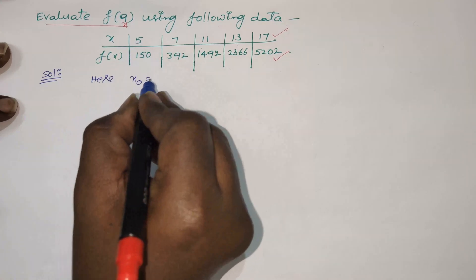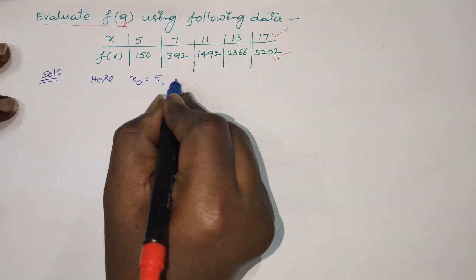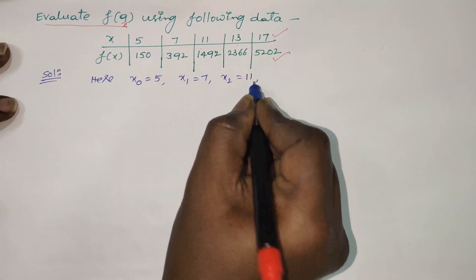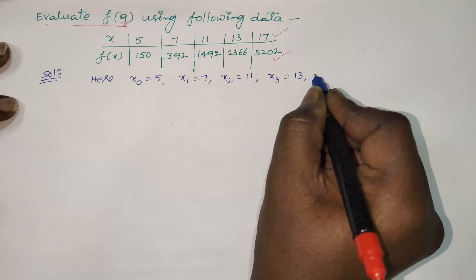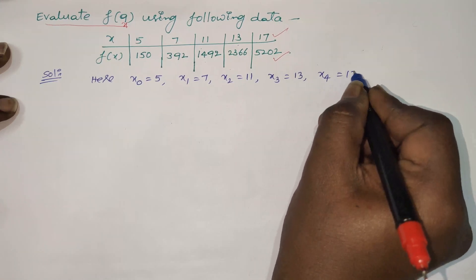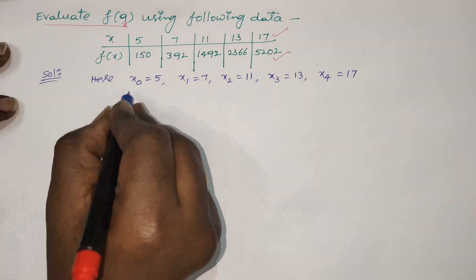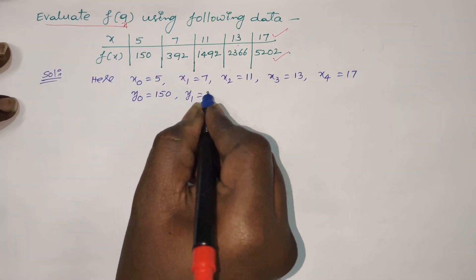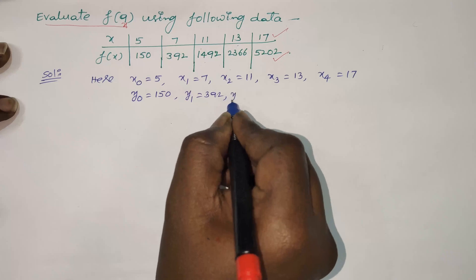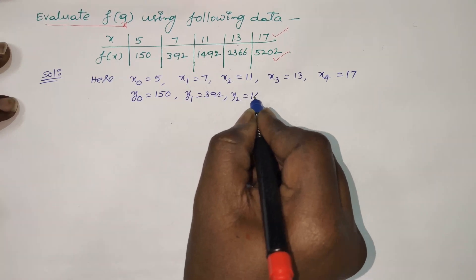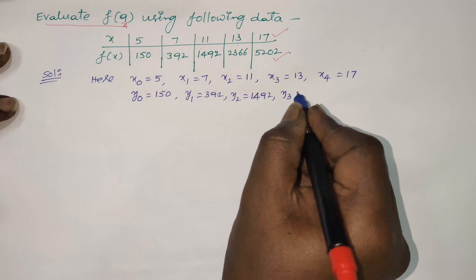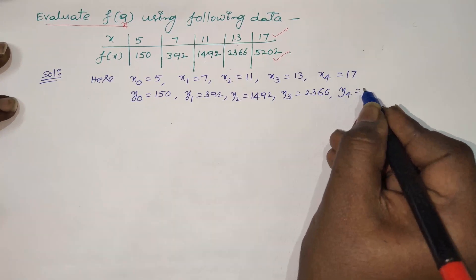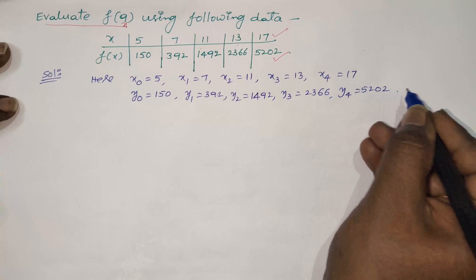First, put the names for the x values: x naught equals 5, x1 equals 7, x2 equals 11, x3 equals 13, x4 equals 17. The respective y values are: y naught equals 150, y1 equals 392, y2 equals 1492, y3 equals 2366, and y4 equals 5202.